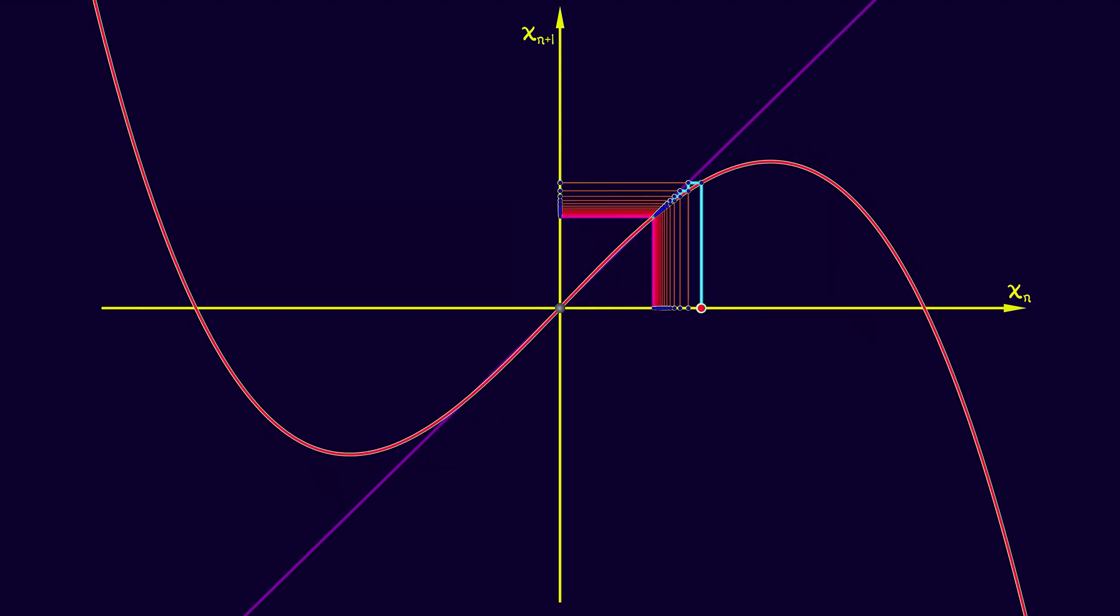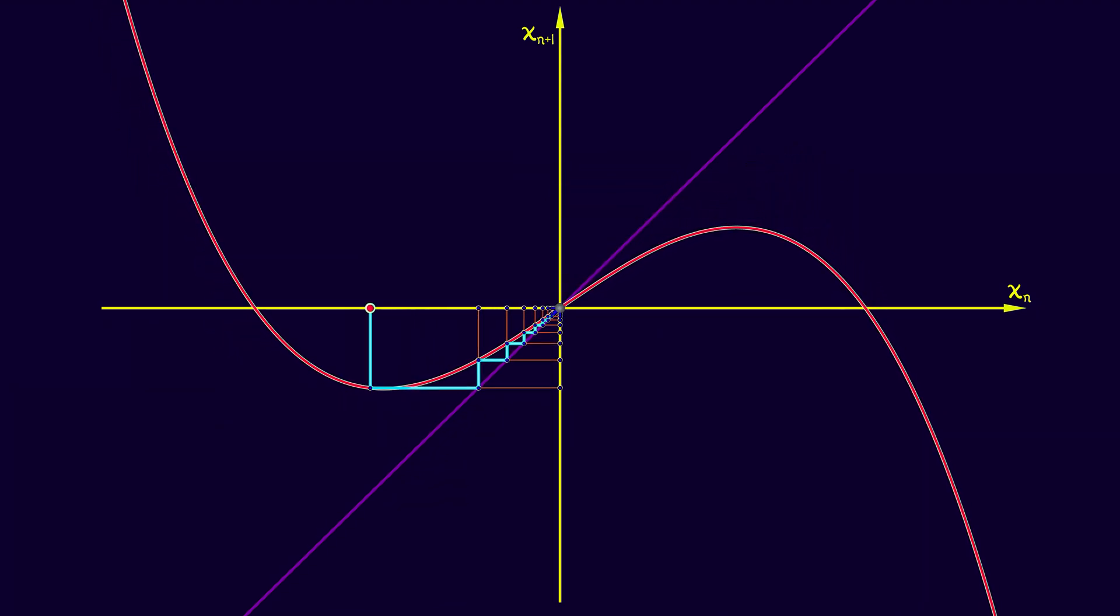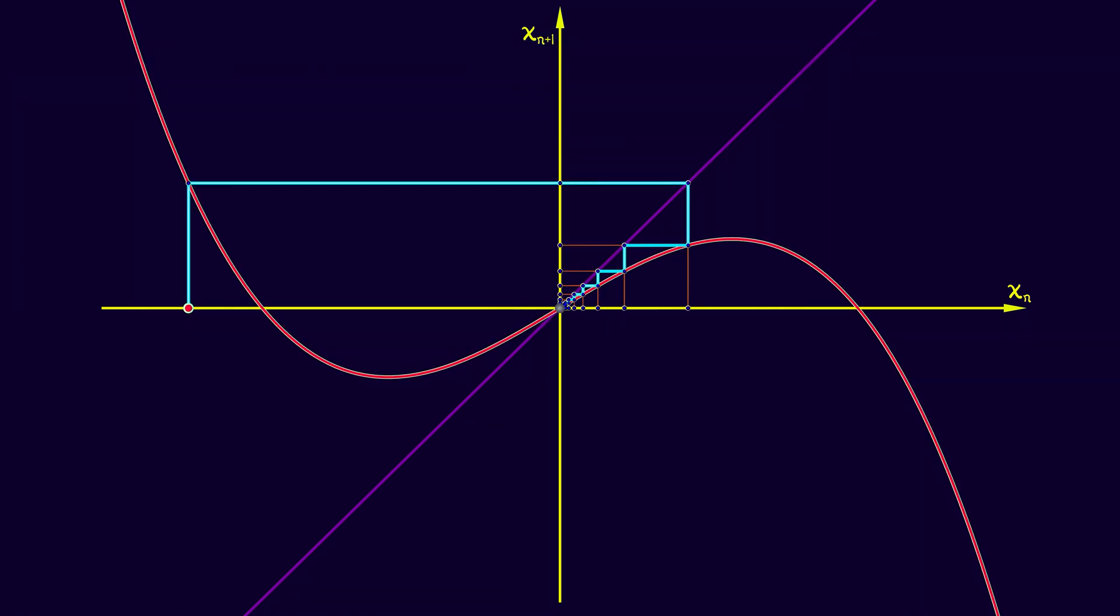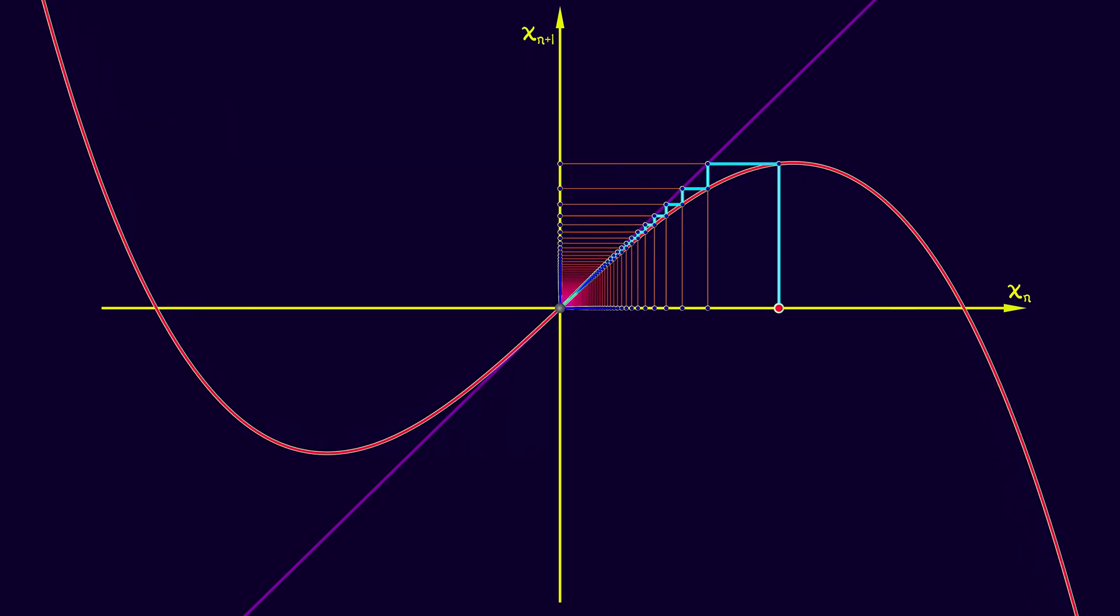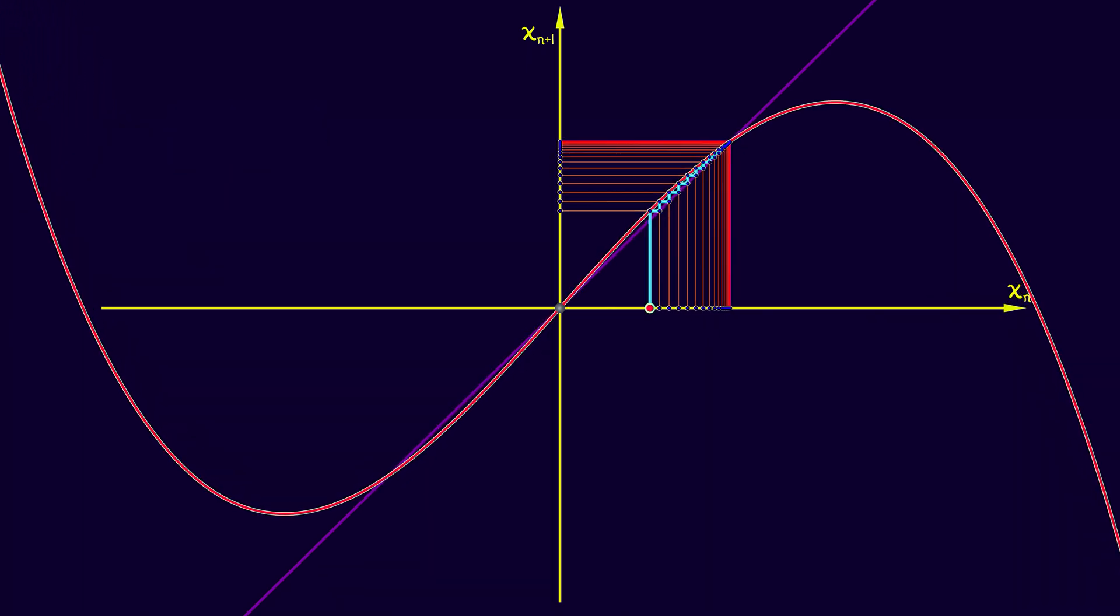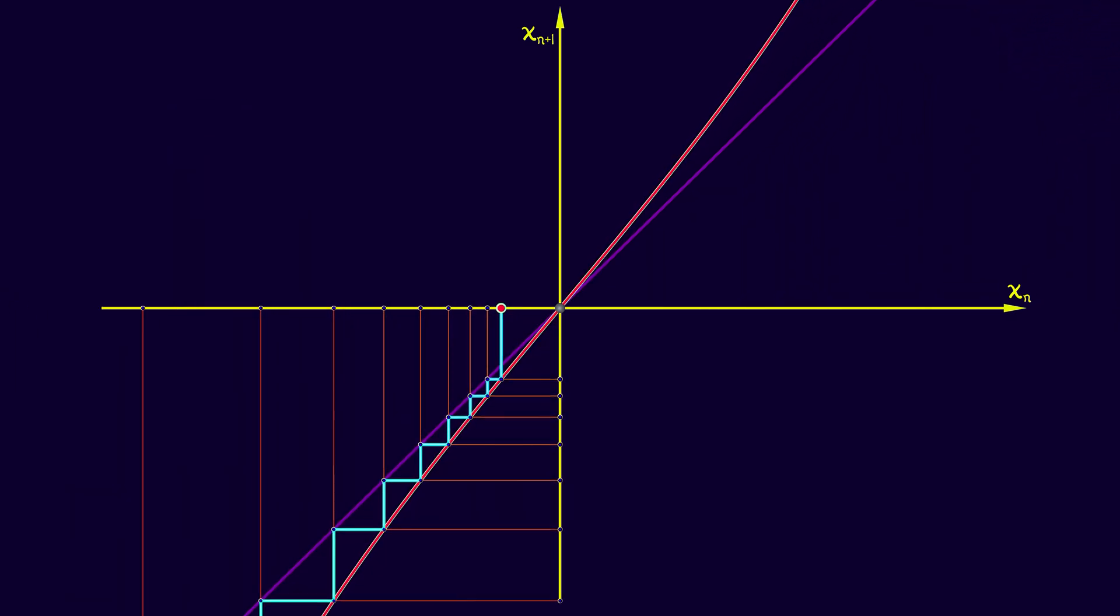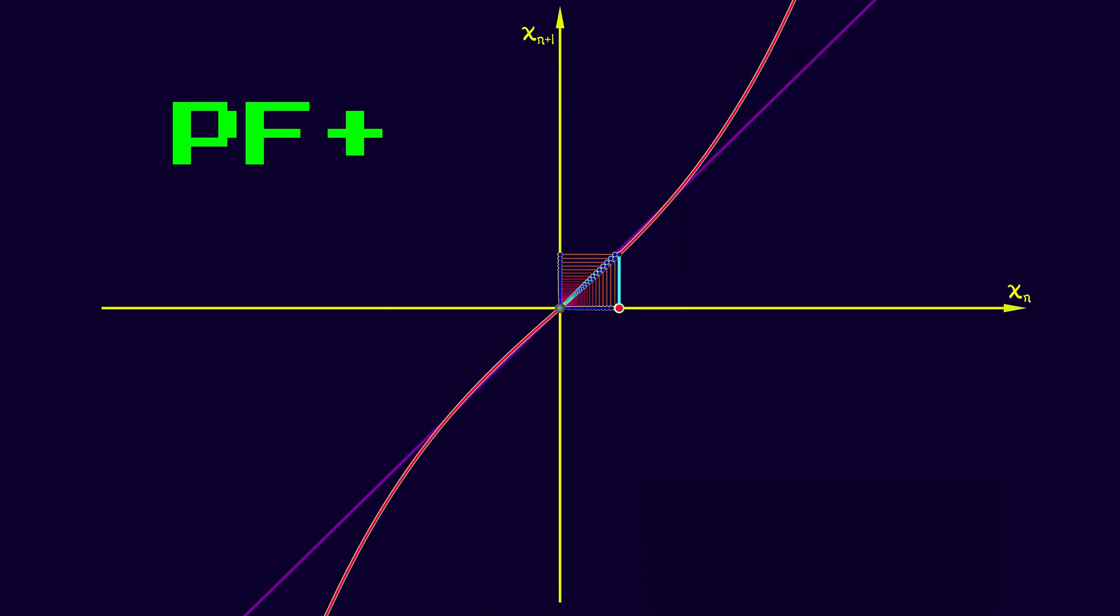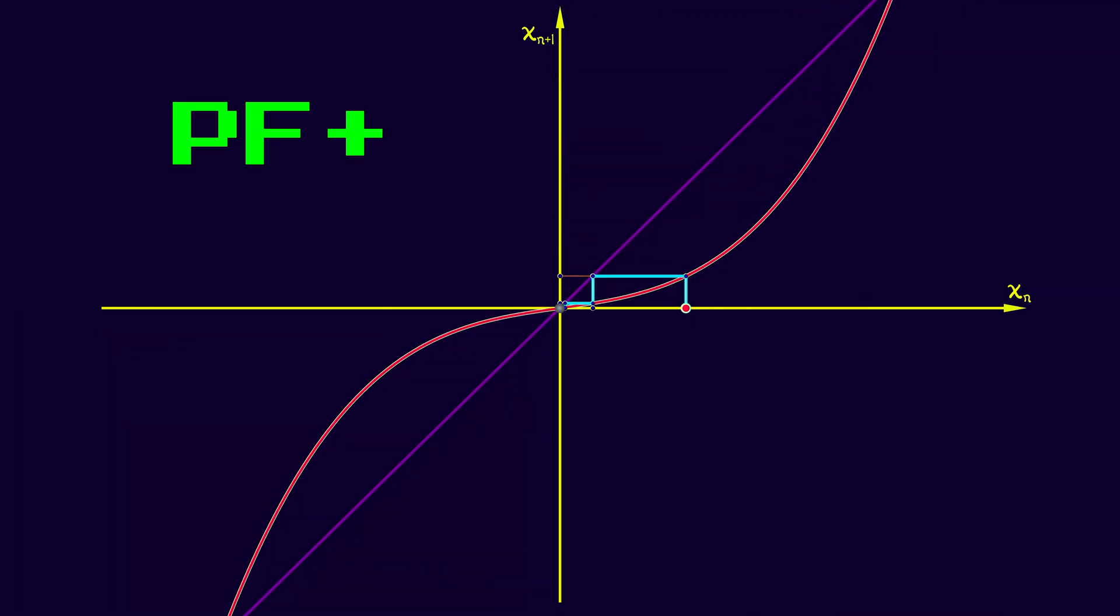Pitchforks are really interesting. That's where you go from one to three. In the supercritical case, you start off with a stable equilibrium that as you pass through the bifurcation emits a pair of stable equilibria while it itself changes from stable to unstable. That's the supercritical variant. The subcritical variant, very similar, but all of the stabilities reversed.